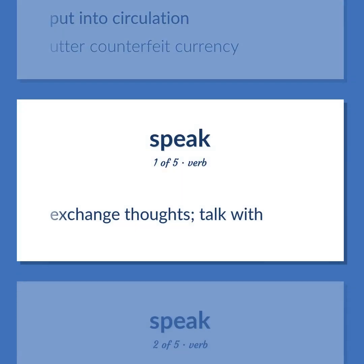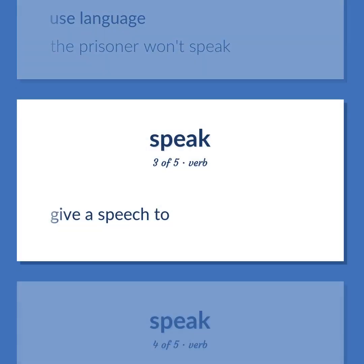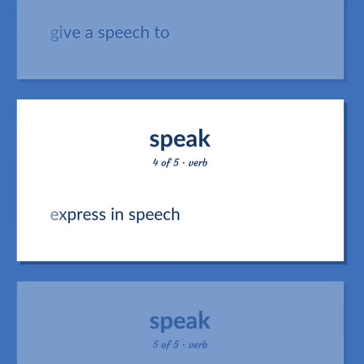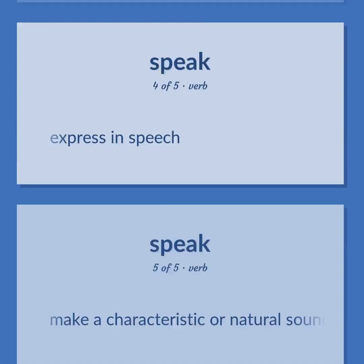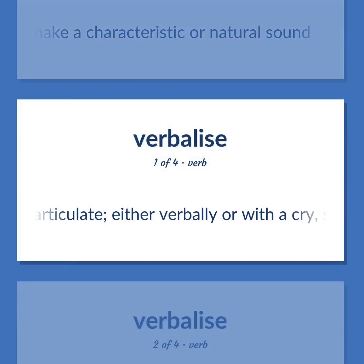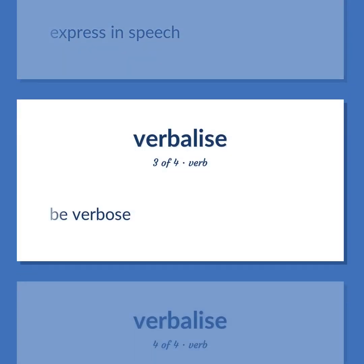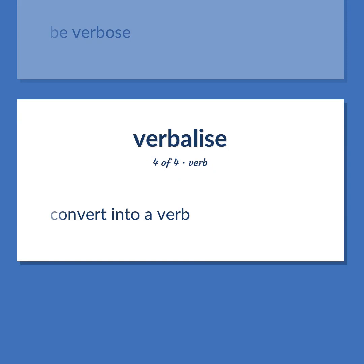Speak: exchange thoughts; talk with. Use language — the prisoner won't speak. Give a speech to. Express in speech. Make a characteristic or natural sound. Articulate, either verbally or with a cry, shout, or noise. Express in speech. Be verbose. Convert into a verb. Become our student and get access to effective and free educational materials — subscribe to our YouTube channel to become a part of our growing community and to learn English effectively.